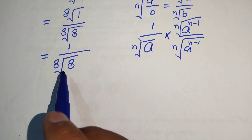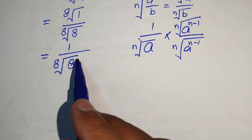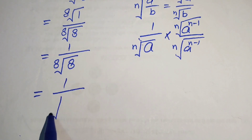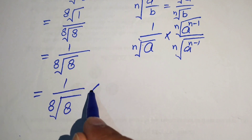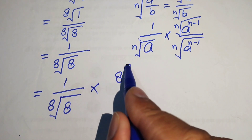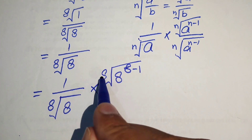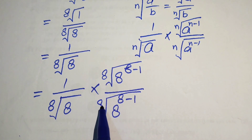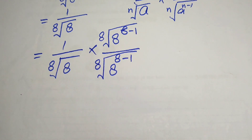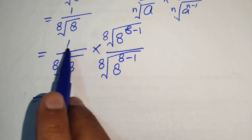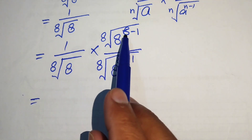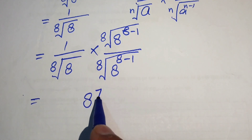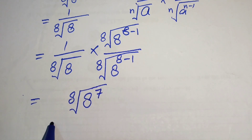Since we have the 8th root, we multiply by the 8th root of 8 to the power of 8 minus 1. So we write this term as 1 over the 8th root of 8, multiplied by the 8th root of 8 to the power of 8 minus 1. After multiplying, the numerator becomes the 8th root of 8 to the power of 7, since 8 minus 1 equals 7.